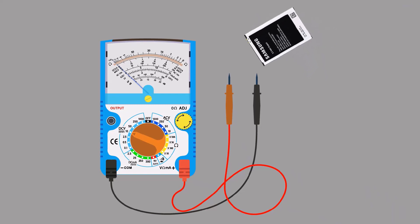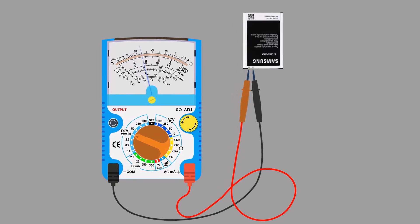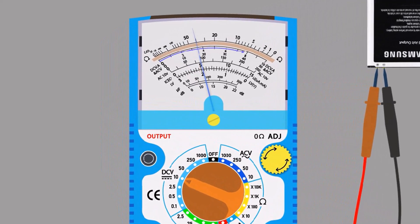Connect the positive terminal of the battery to the red wire and the negative terminal of the battery to the black wire. We will read the 10-volt scale.